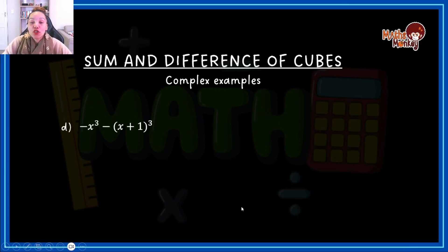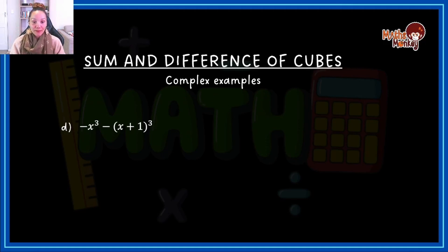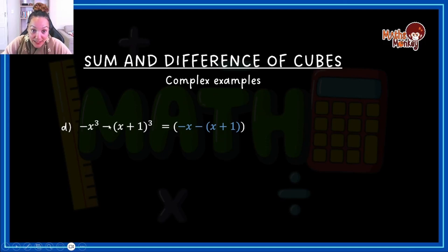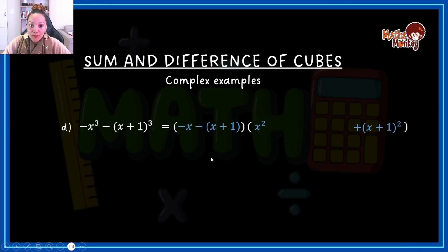Now let's do one more example, but this is a complex one. I can guarantee you, if you can understand this one, you don't have to worry about this section, because this is as difficult as it gets. I notice this is a difference — this is a cube and this is a cube. What do I do? I open my first bracket following the same steps. This is negative. x is the cube root of that. Then x plus 1 cubed means that x plus 1 is the cube root. I write the same sign as it is in the question. Open the second bracket: I square the first term, I square the second term, I write the opposite sign, and then I take this and multiply it by that.